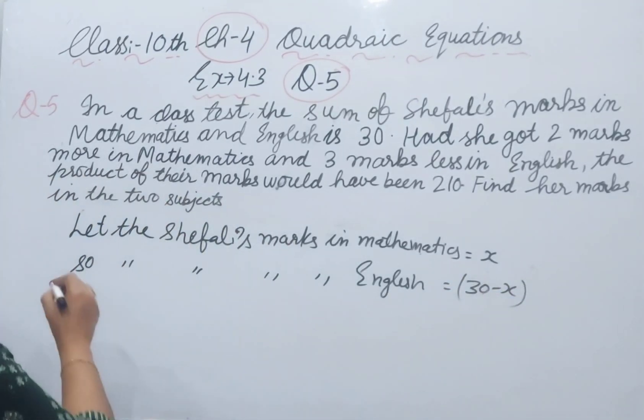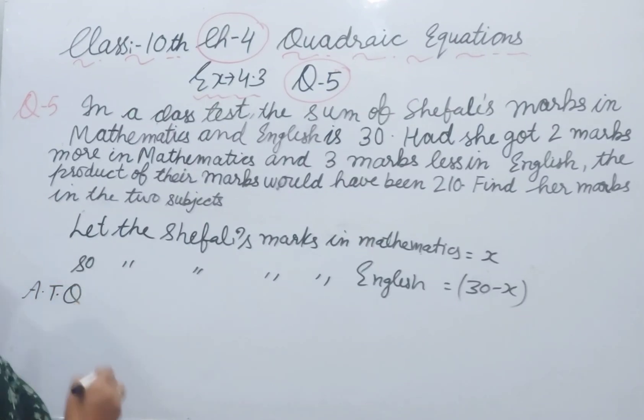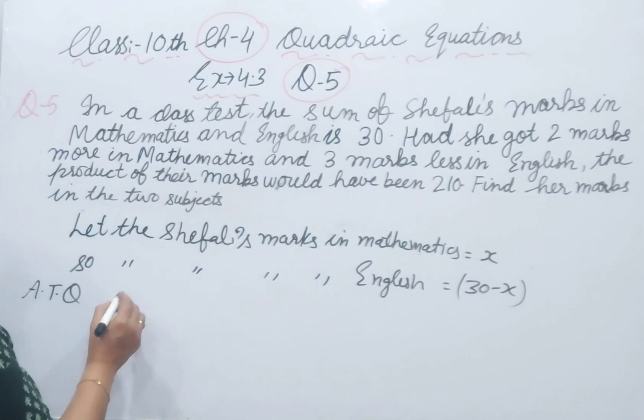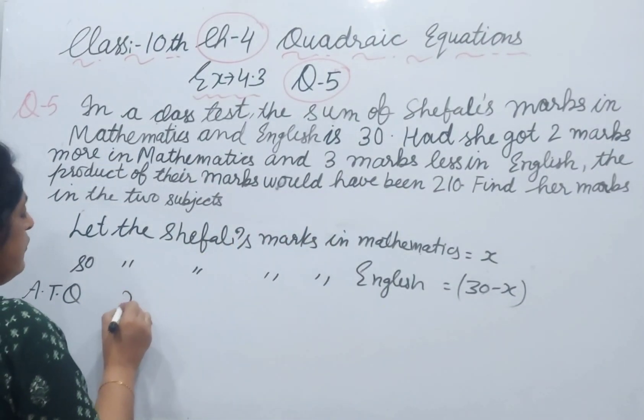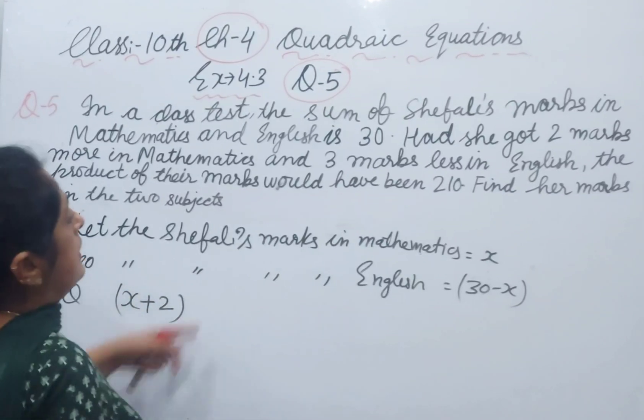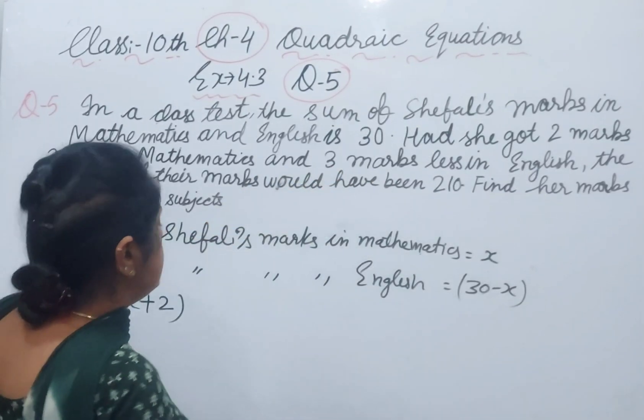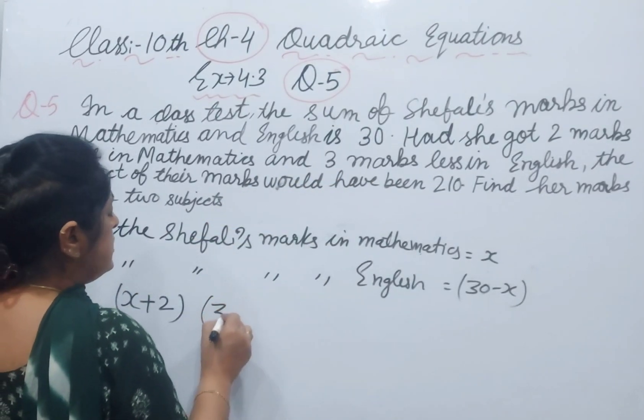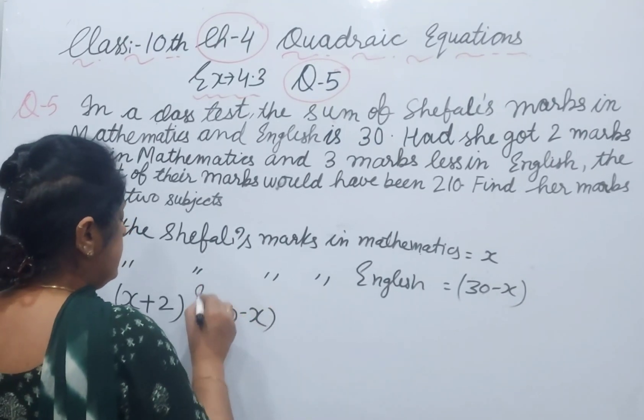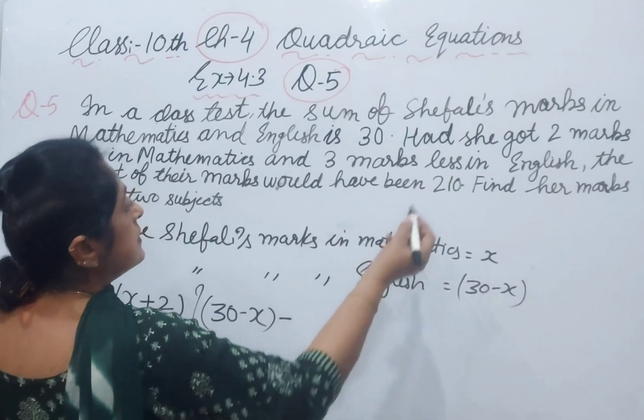Now according to the question, if she got 2 marks more in mathematics, the math marks are x, so taking 2 more gives x plus 2. And 3 marks less in English: English marks are 30 minus x, minus 3.